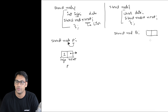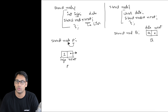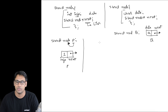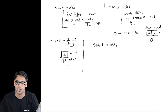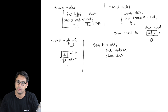If we declare a variable `struct node q`, this node `q` has a data part that stores a character — such as a, b, c, d — and a next part that stores the address of the next node. We can also define a node that stores multiple types of data, for example `struct node` with `int data1`, `char data2`, and `float data3`.